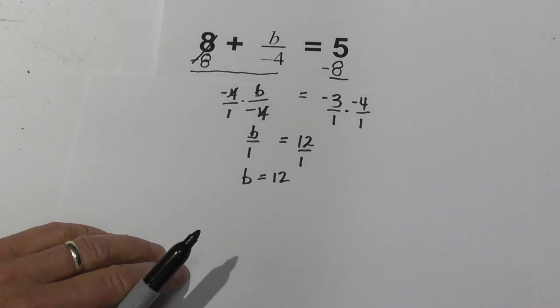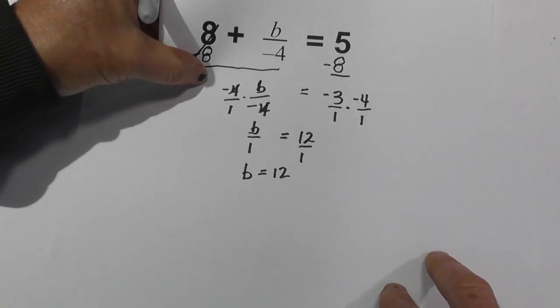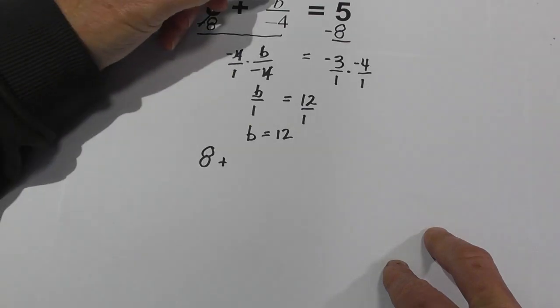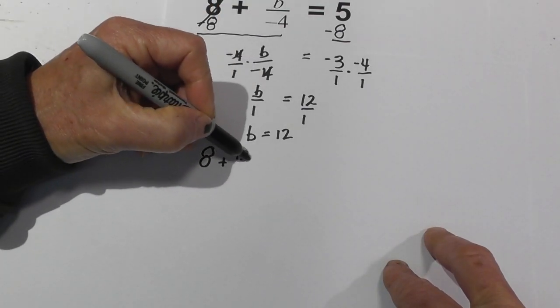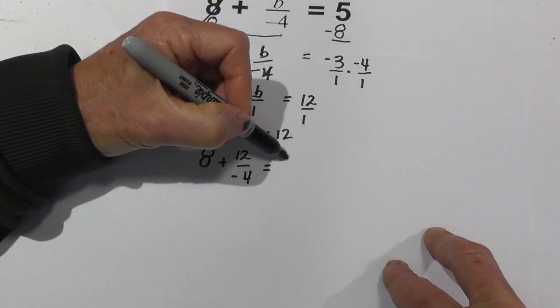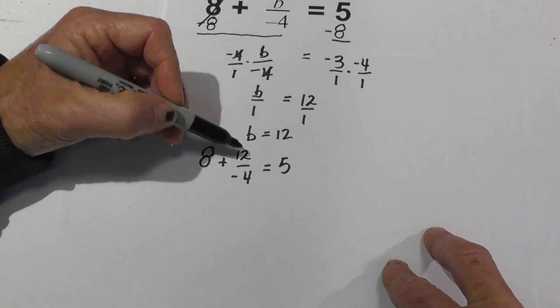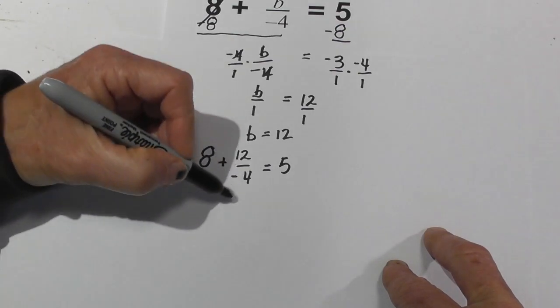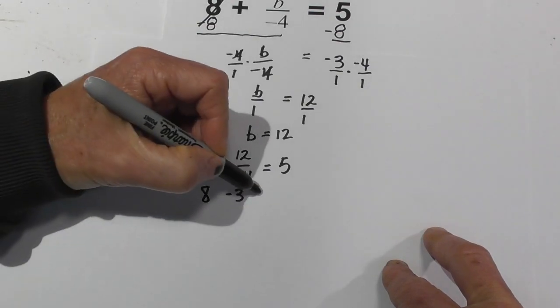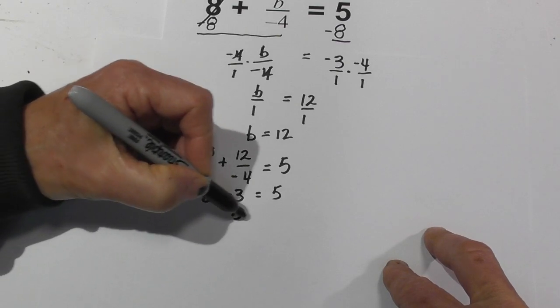Now let's put this in the original equation and see if it works. Let me move it up just a little bit. So I'm going to plug it in. We have 8 plus b is now 12 over negative 4 equals 5. Now let's do this: 12 divided by negative 4 is negative 3. Let's bring down the 8 minus 3 equals 5. And last I checked, 8 minus 3 is indeed 5.